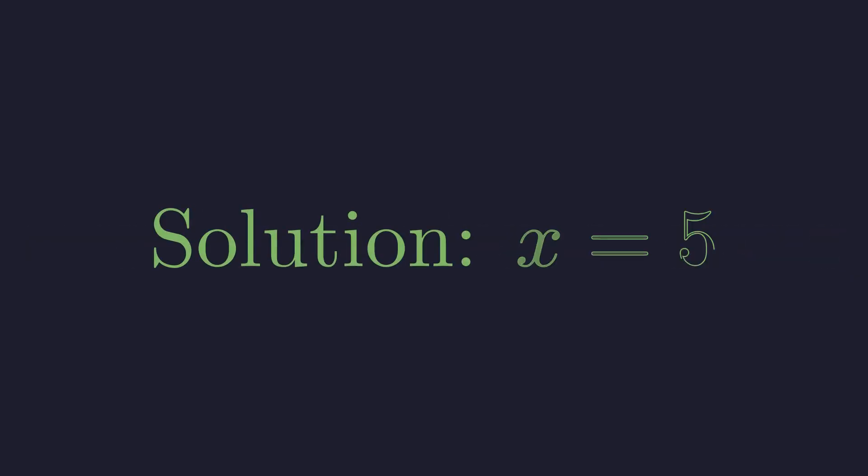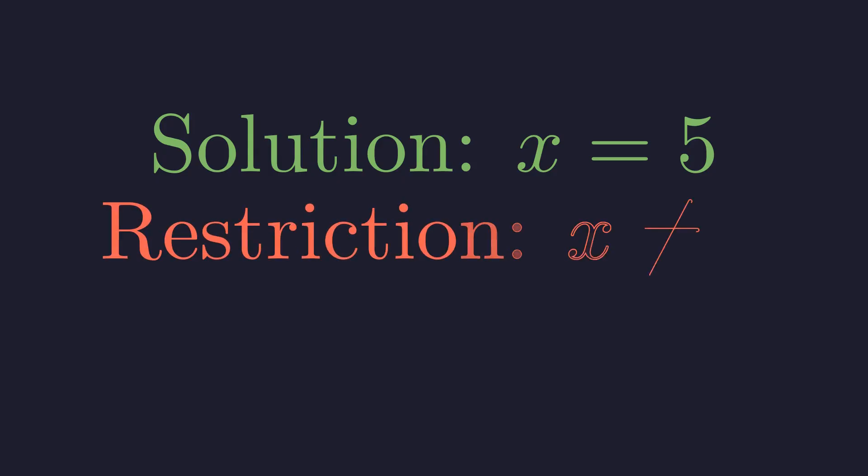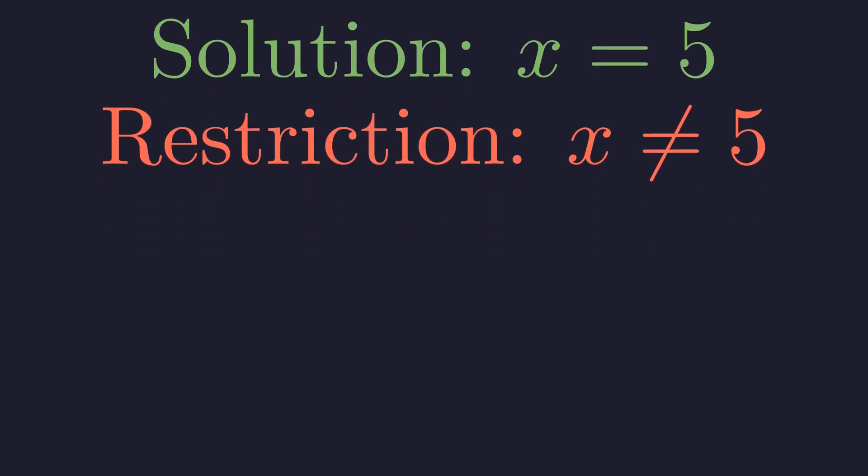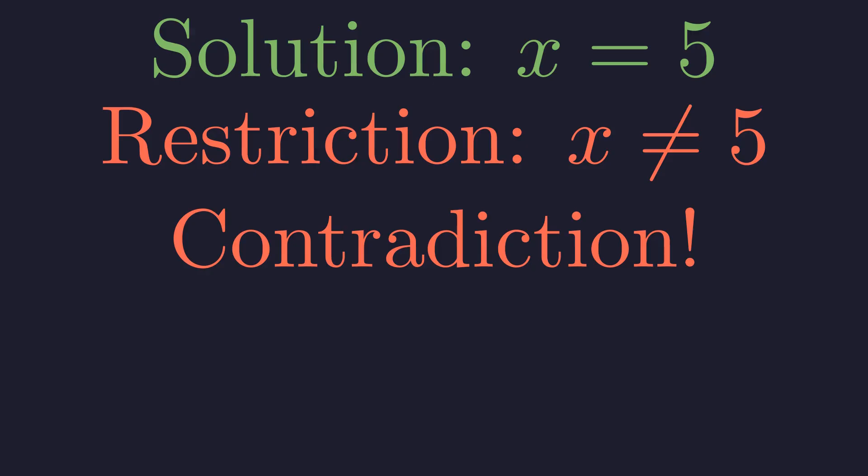Our algebra gave us x equals 5, but our domain restriction says x cannot equal 5. We have a contradiction. The algebra gives us the one value we're forbidden to use. This is the elegance of the trap. The solution eliminates itself.